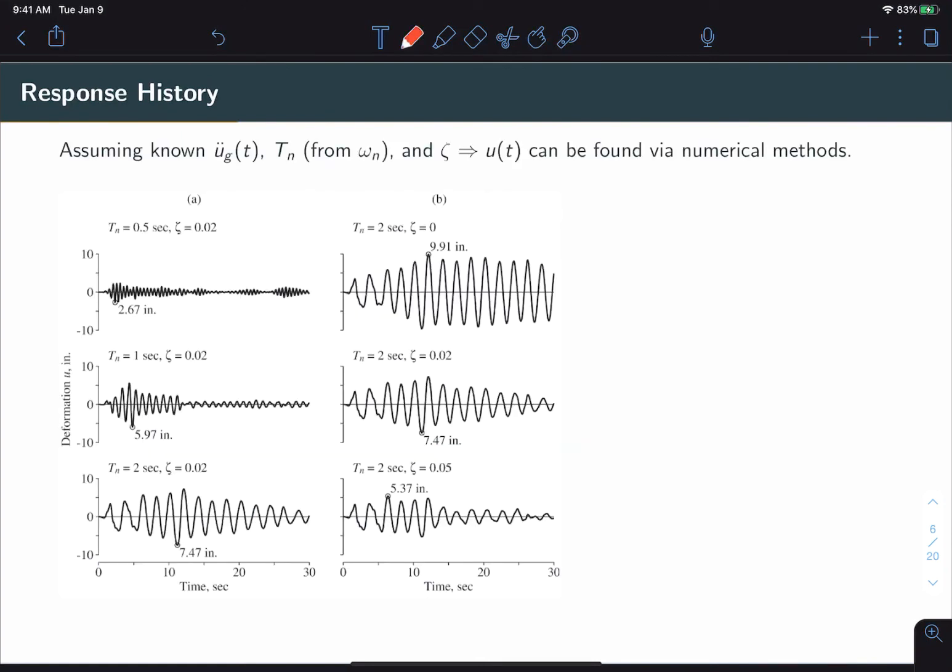Now, assuming we know the ground acceleration as well as the natural period and damping of a structure, then its displacement response U can simply be found via numerical methods like we discussed in the previous unit. So, here we have some example responses to the El Centro ground motion. Let's focus on that first column on the left. Alright? So, in this case damping is held constant at 2% and we vary the period of the structure from 0.5 seconds to 2 seconds.